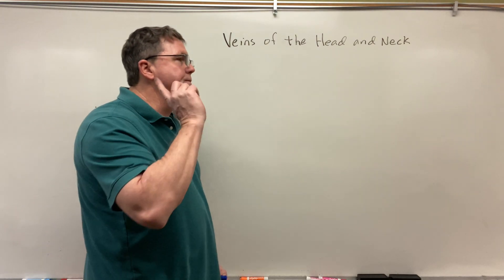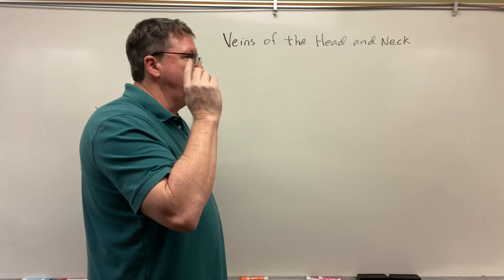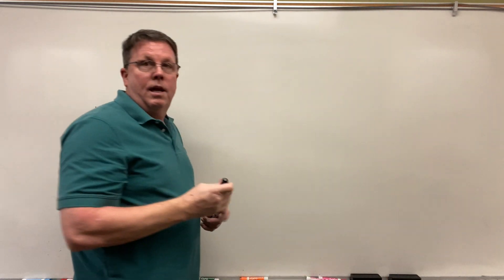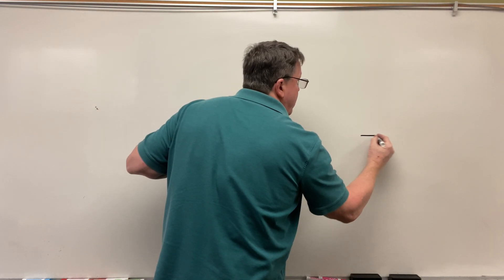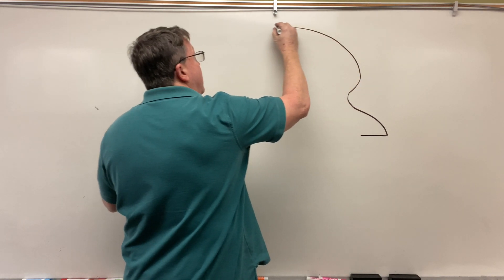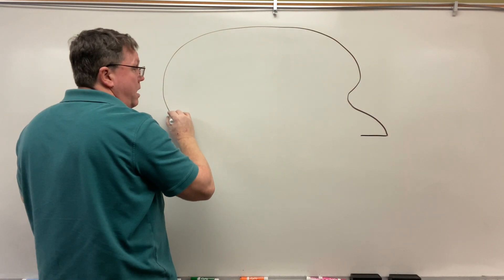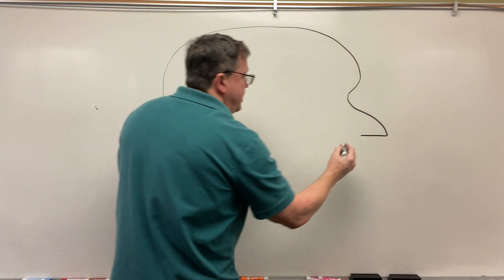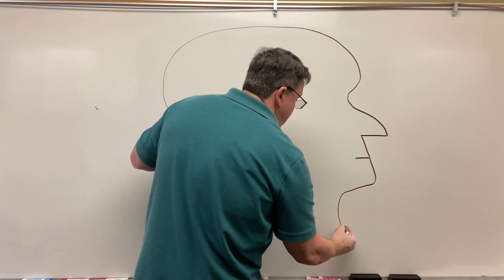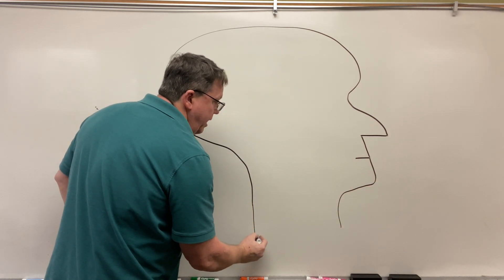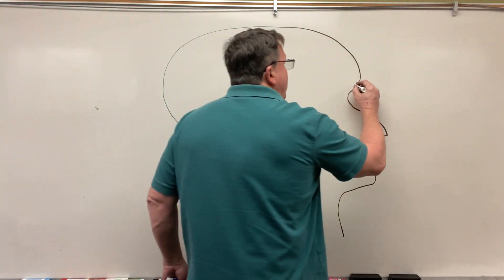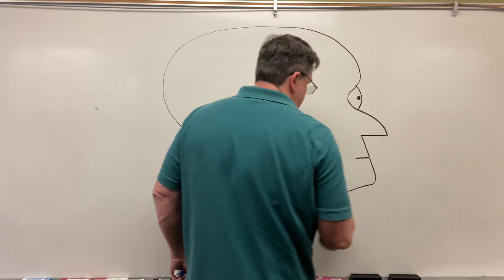We're going to be looking at a view as if you're looking at me from the side. Let's go ahead and draw this — I'm going to draw the nose, an eye, the top of the head. Looks like we're drawing Mr. Burns from the Simpsons. Okay, this is going to be my mouth. The one thing I'm not going to put on here is where these veins go once they get out of the head and down into the chest, but we will talk about it.